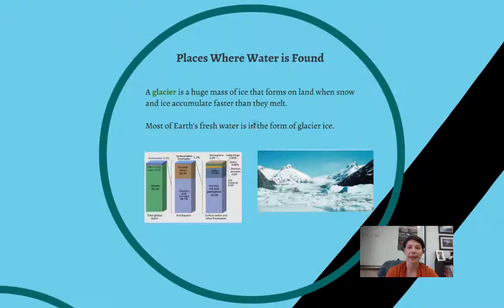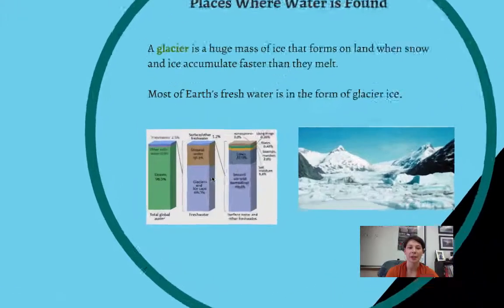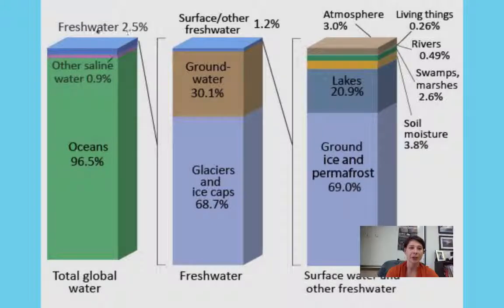What is a glacier? Well, a glacier is a giant mass of ice that forms on land when snow and ice accumulate. So they build up faster than they melt. So snow falls down and it packs down. And that snow takes longer to melt than it does to accumulate. And so what you see over time is a building up of glacial ice. So most of our fresh water is in the form of glacier ice.